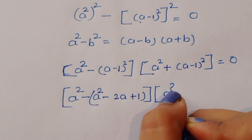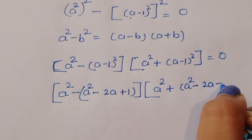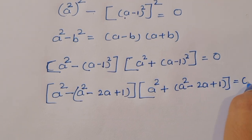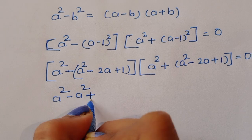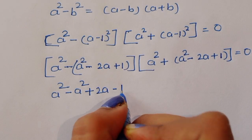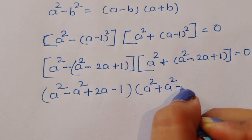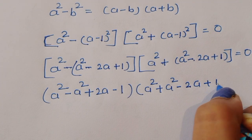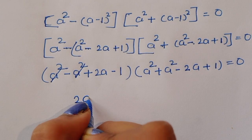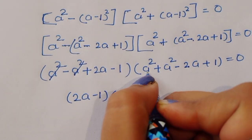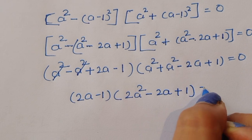And for the second factor, a² plus (a-1)² = a² plus (a² minus 2a plus 1), equal to 0. Expanding the first factor: a² minus a² minus minus plus 2a plus minus minus 1. The a² terms cancel giving 2a minus 1. The second factor becomes 2a² minus 2a plus 1.